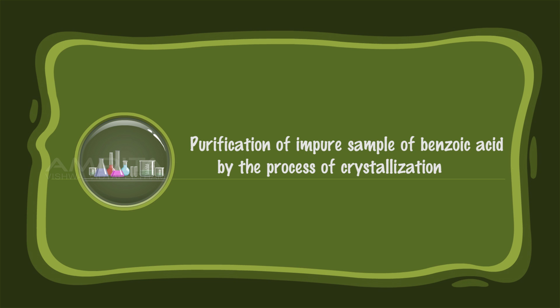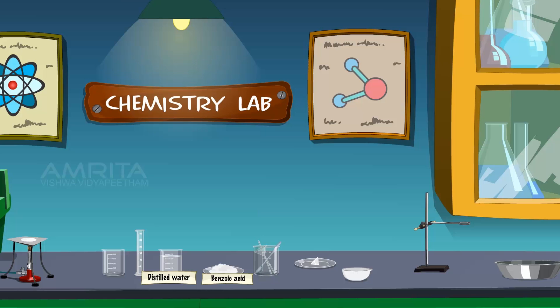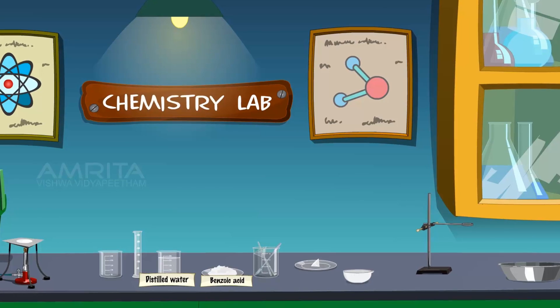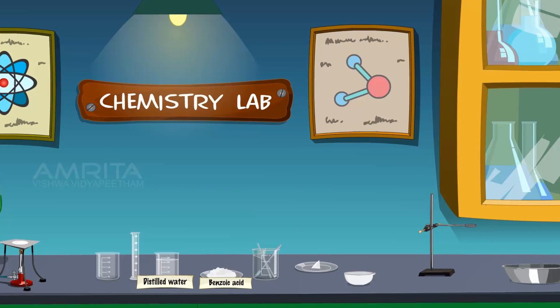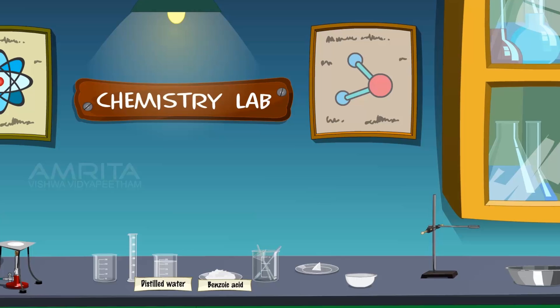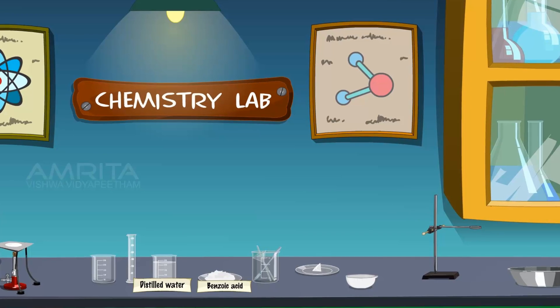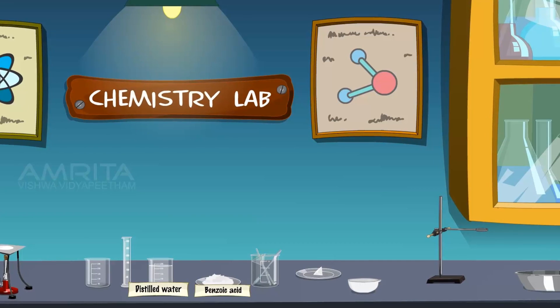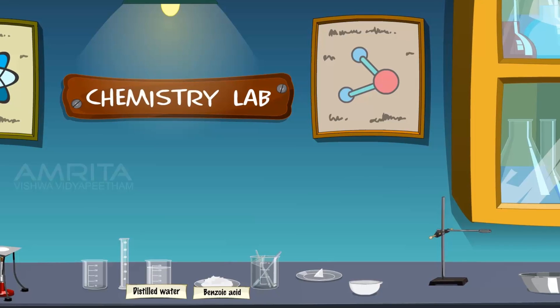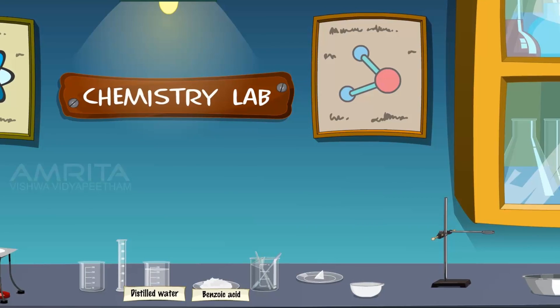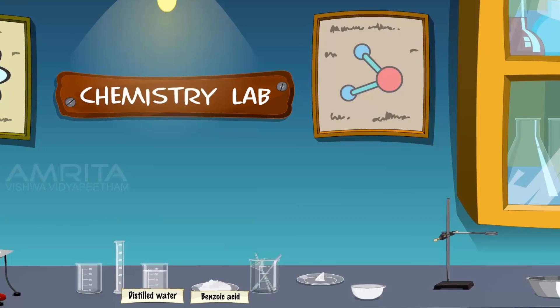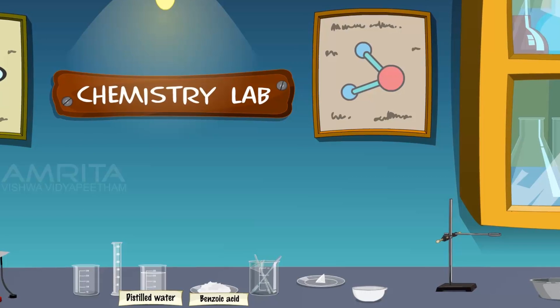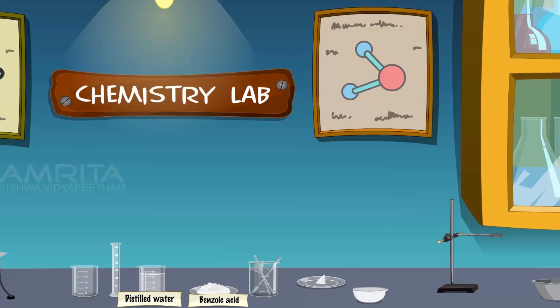Purification of impure sample of benzoic acid by the process of crystallization. We require: crude sample of benzoic acid, distilled water, beakers, measuring cylinders, spatula, glass rod, china dish, fluted filter paper, funnel, filter paper, iron stand with clamp, trough, wire gauze, tripod stand, Bunsen burner, etc.